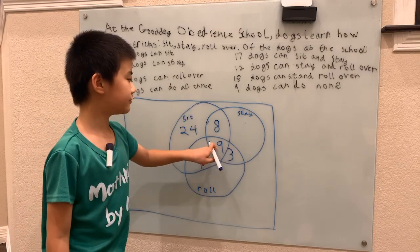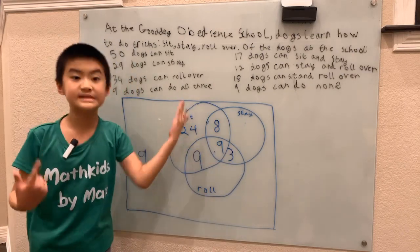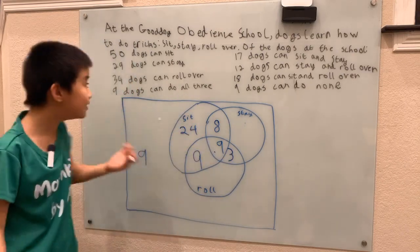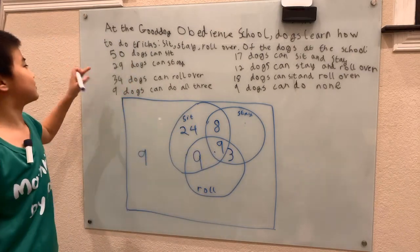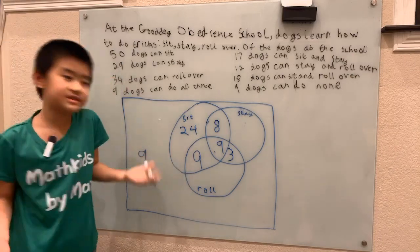For stay: 9 plus 3 is 12, plus 8 is 20. It's easy to subtract 20 from 29 — that's just 9 dogs that can only stay.